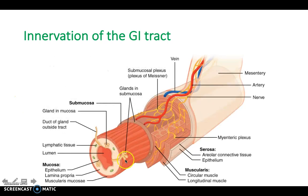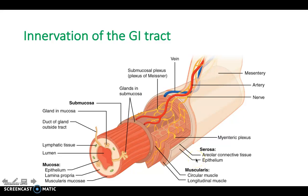Looking at a diagram: the mucosa is the inner layer, made up of the epithelium, the lamina propria, and the muscularis mucosa. Then you have the submucosa, and within the submucosa sits Meissner's plexus, or the submucosal plexus. Then you have the muscularis propria, made up of circular and longitudinal muscle. In between the circular and longitudinal muscle lies Auerbach's plexus, or the myenteric plexus. The outer layer is the connective tissue serosa, alternatively named the adventitia.